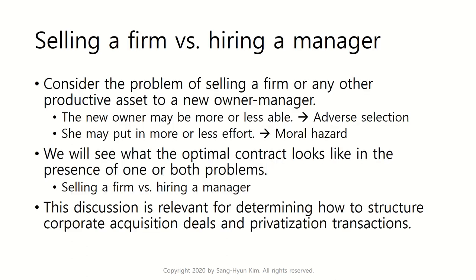The topic is selling a firm versus hiring a manager. Consider the problem of selling a firm or any other productive asset to a new owner-manager. This new owner-manager may be more or less productive — more or less capable — so there is an element of adverse selection: asymmetric information about productivity or ability. And she may put in more or less effort, so there is a moral hazard element as well.